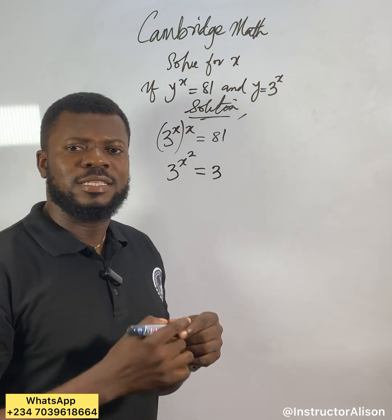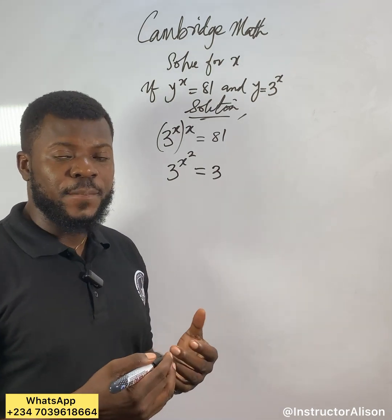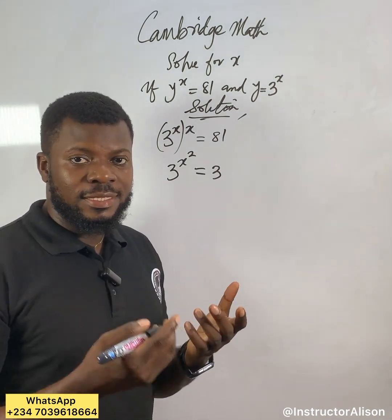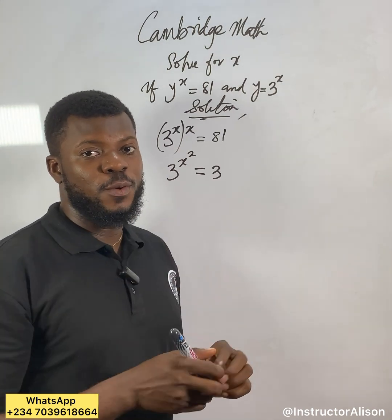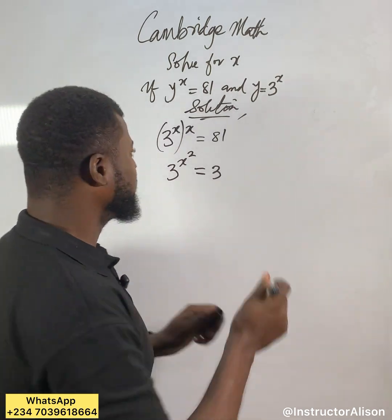If you reduce 81 as 3, you can say 3 times 3 times 3 times 3. 3 times 3 is 9, times another 3 is 27, times another 3 is 81. So 3 raised to the power of 4 will give you 81. I put 3^4.